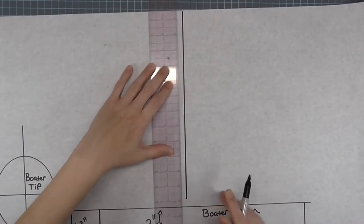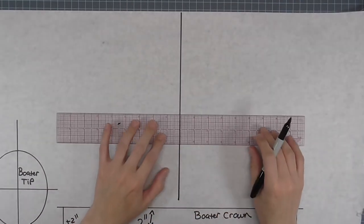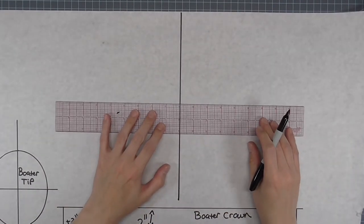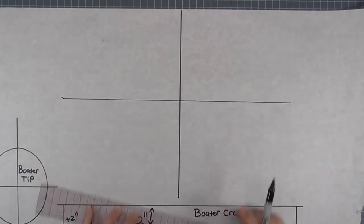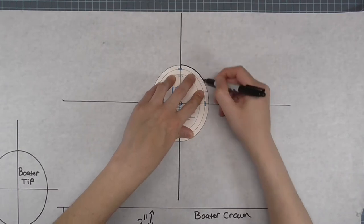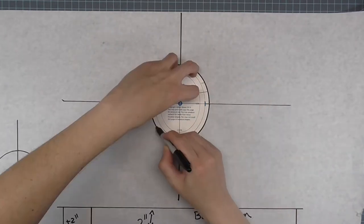For the brim, draw a straight line on the paper. Draw a perpendicular line in the middle. Center your template on the axis lines matching notches, and trace around the template.